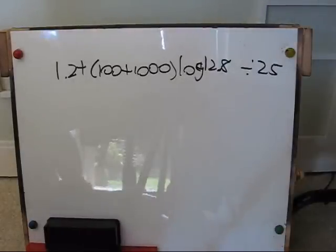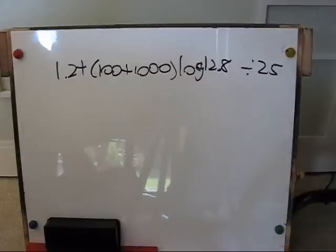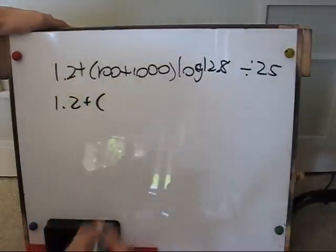So for example, in this expression, 1.2 plus quantity 100 plus 1,000 in quantity log 12.8 divided by 25, the first thing you need to do is simplify the expression in the parentheses, which is 100 plus 1,000.